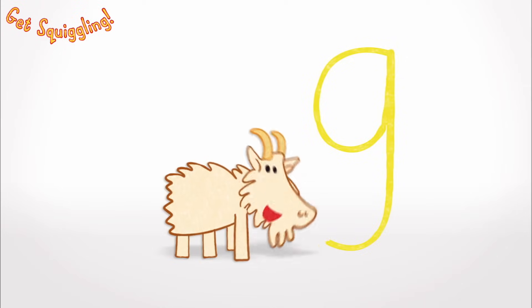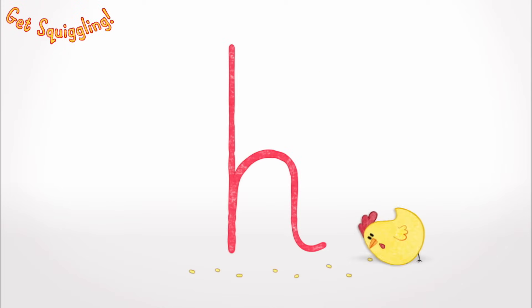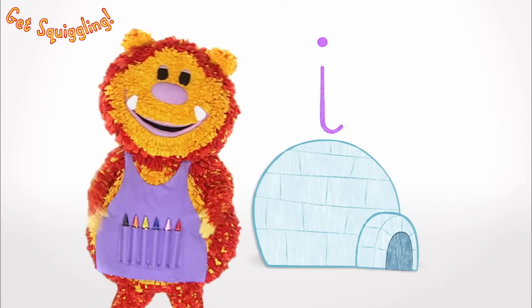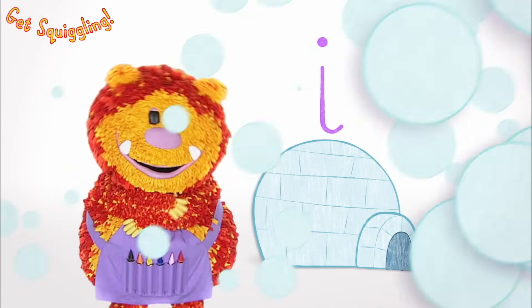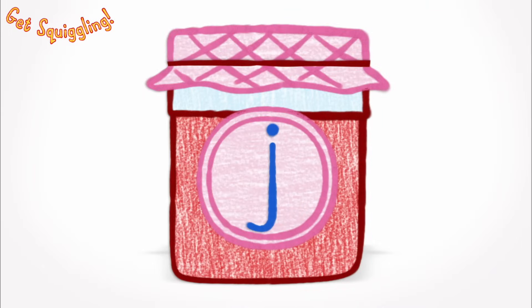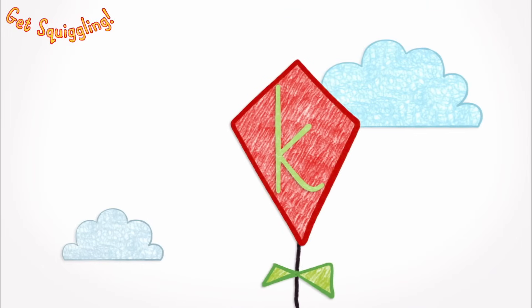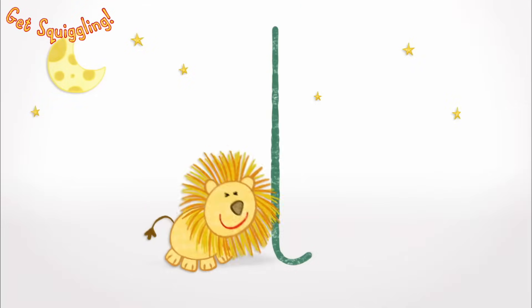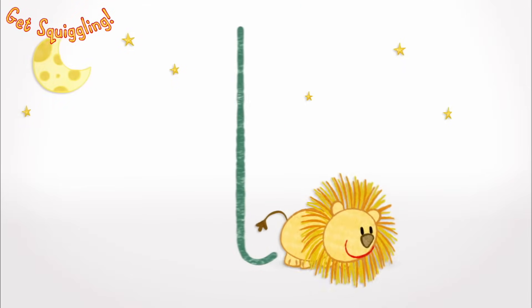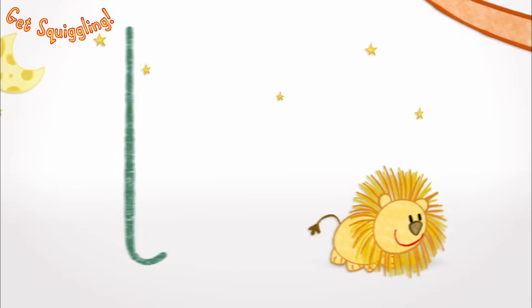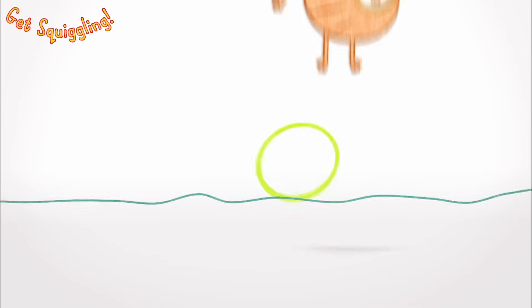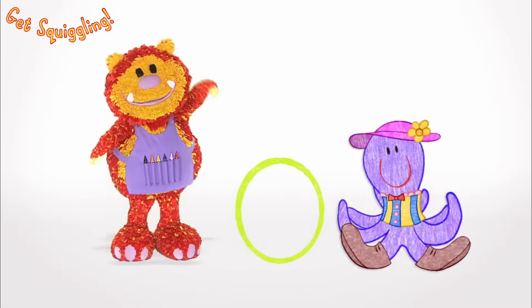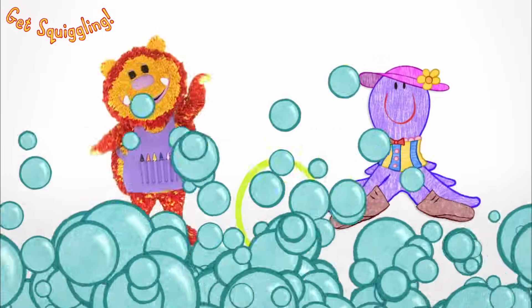G is for Goat, H is for Hen, I is for Igloo, what a snowy den! J is for Jam, K is for Kite, L is for Lion prowling through the night. M is for Monkey, N is for Nose, O is for Octopus wearing funny clothes!